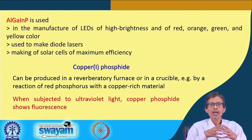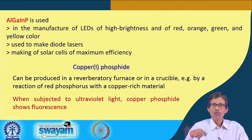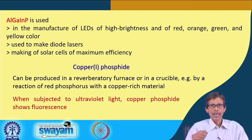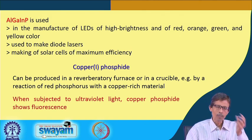Some special techniques are useful here — not only hydrothermal technique as used for nickel phosphide, but basically a simple solid-state synthesis in an oven or muffle furnace using elemental phosphorus or white phosphorus as the phosphorus source, along with aluminum powder, gallium, and indium in their corresponding metallic states. It is also very useful for making diode lasers, even though it is made in very small amounts.